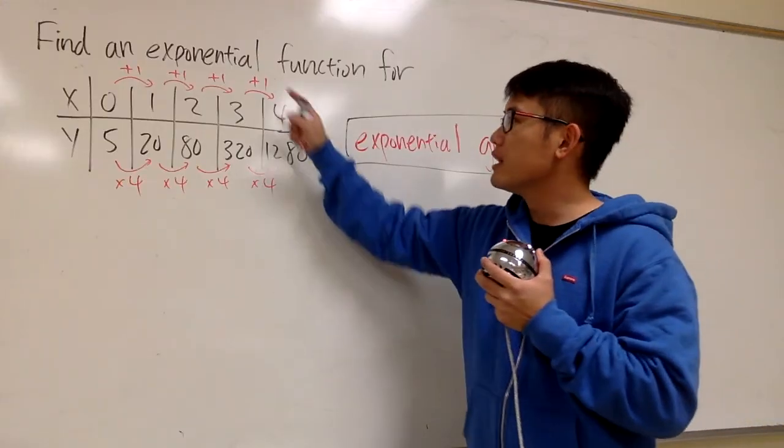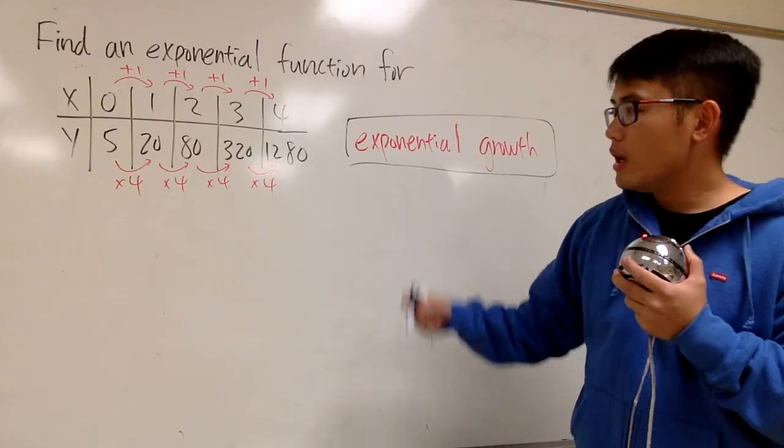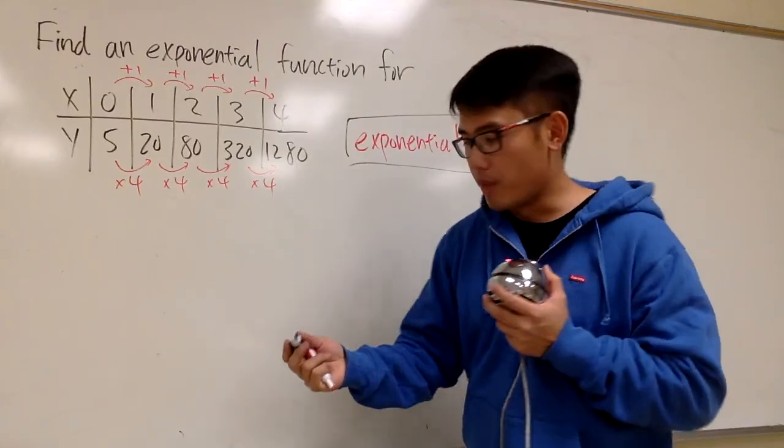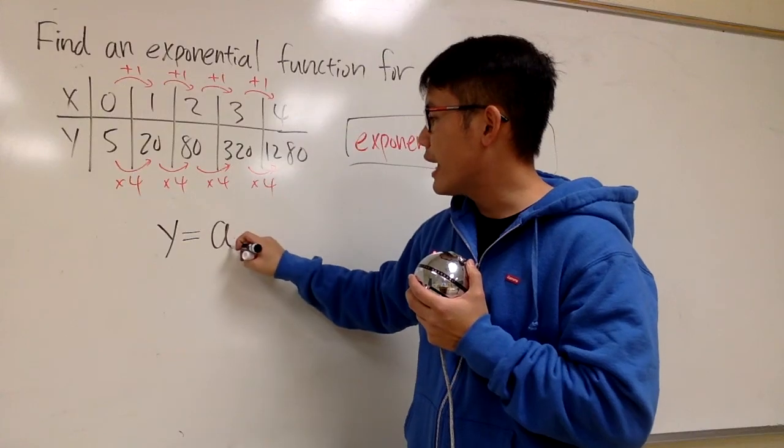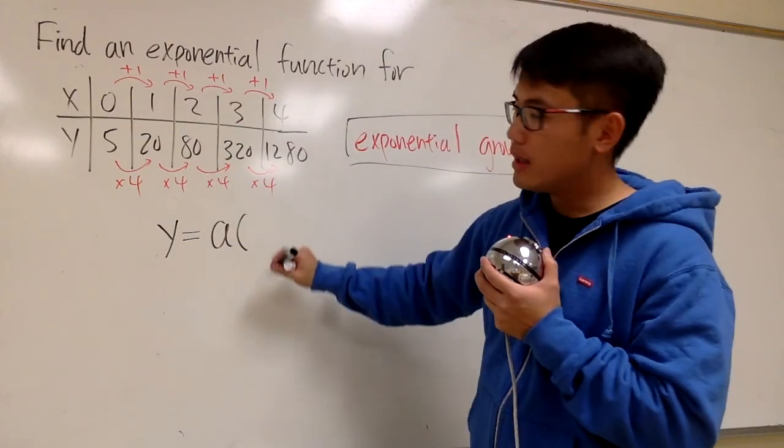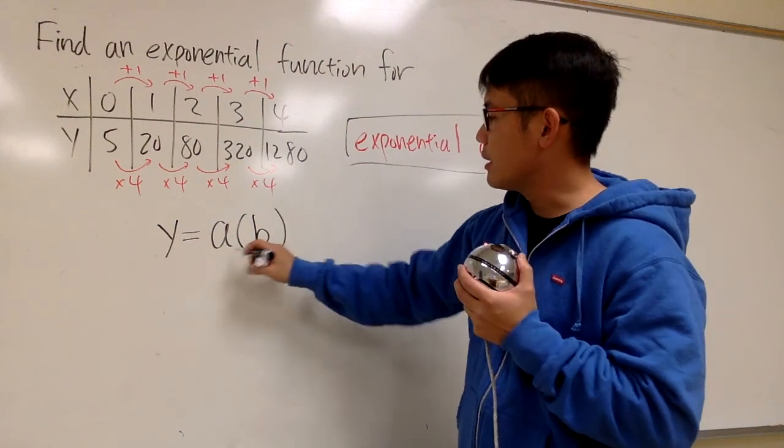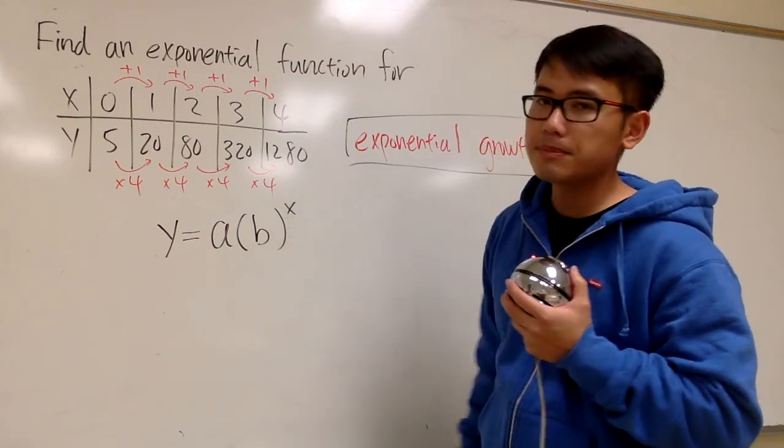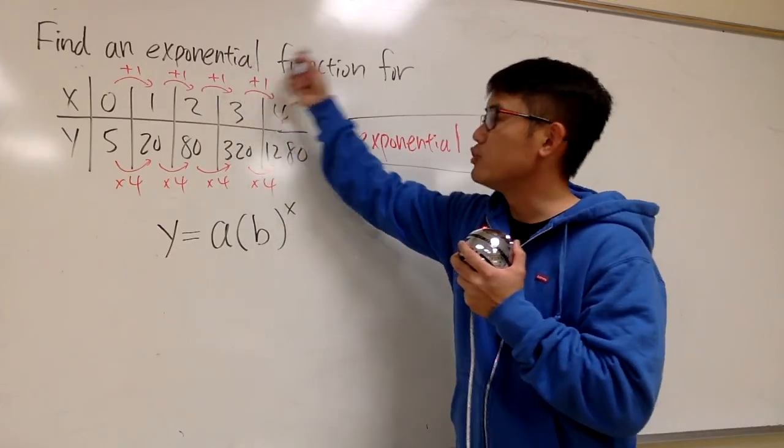This is not it yet though, because we are trying to find an exponential function for it. Let's write down the general form. We have y is equal to some number a times the base for the exponential. Let me just put on b and put that in the parentheses and raise that to the x power. This is the general form for an exponential function.